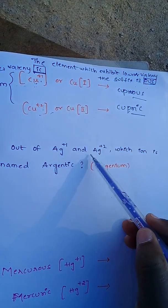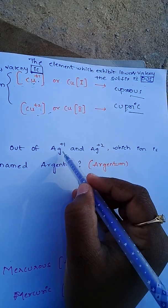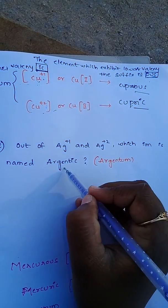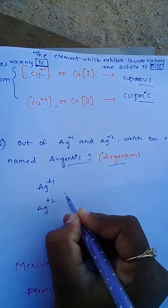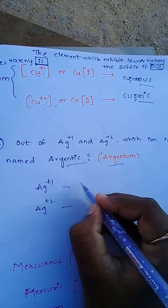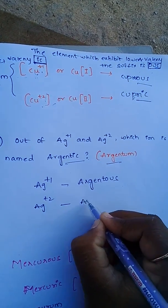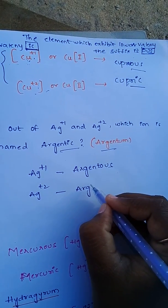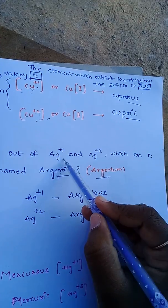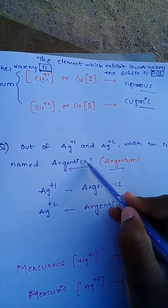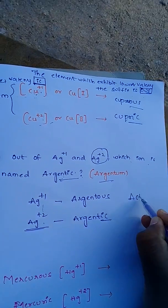Out of Ag plus one and Ag plus two, which ion is named as Argentic? Silver's Latin name is Argentum. Ag plus one is the lower valency, so the suffix is -ous, giving Argentous. Ag plus two is the higher valency, so the suffix is -ic, giving Argentic. Therefore, Ag plus two is named Argentic.